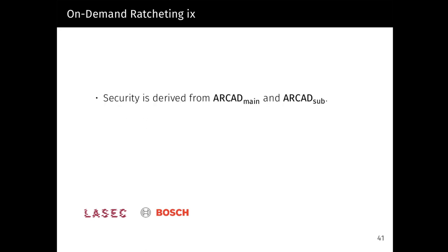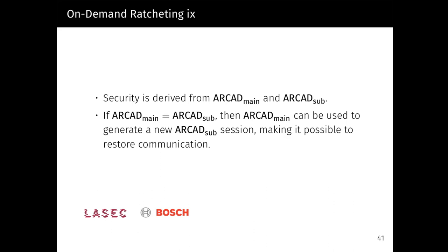We can show that we can derive the security of our hybrid construction directly from the security properties of the subprotocols, namely RCAT_main and RCAT_sub. Furthermore, if the two protocols are actually identical, so if RCAT_main is equal to RCAT_sub, then we can use RCAT_main to generate a new RCAT_sub session whenever we want, making it possible to restore a broken communication in RCAT_sub.